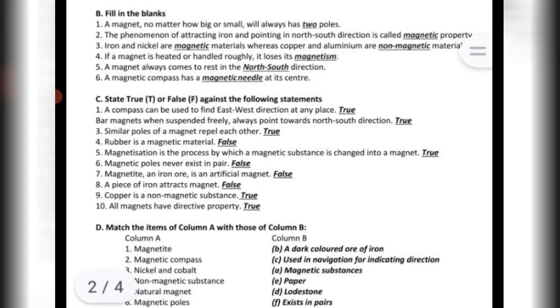Match. Magnetite: A dark-colored ore of iron. Magnetic compass: used in navigation for indicating direction. Nickel and cobalt: Magnetic substances.